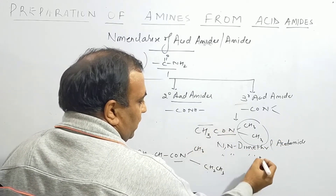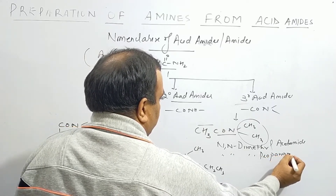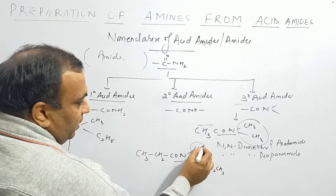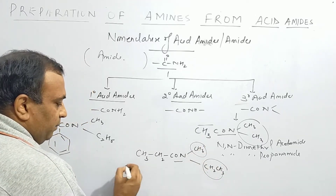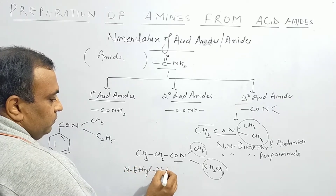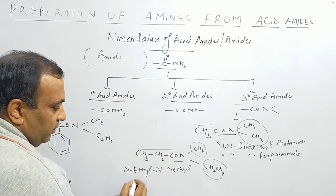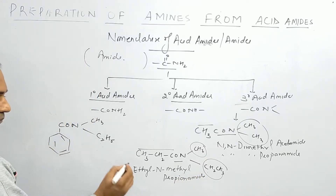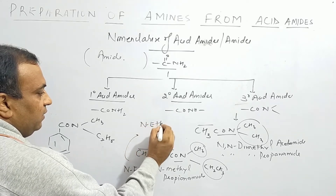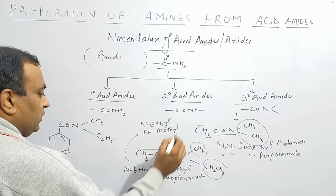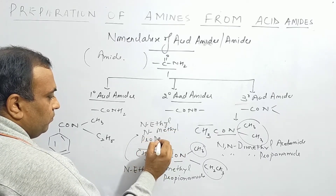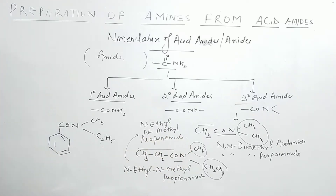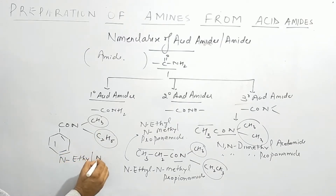For tertiary amides with two-carbon chain we write Ethanamide as base. If we have ethyl and methyl groups on nitrogen — ethyl comes first alphabetically — so it is N-Ethyl-N-Methyl. For three carbons the common name is N-Ethyl-N-Methyl Propionamide, IUPAC is N-Ethyl-N-Methyl Propanamide. The benzene example is N-Ethyl-N-Methyl Benzamide.